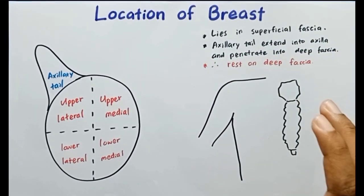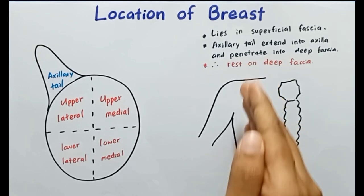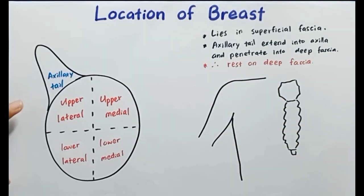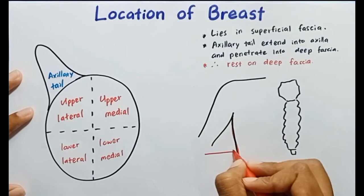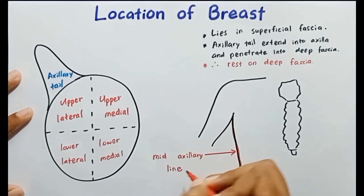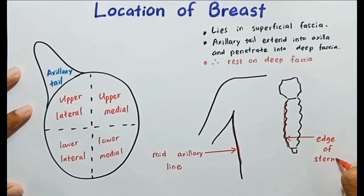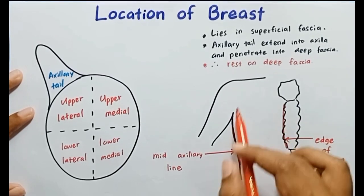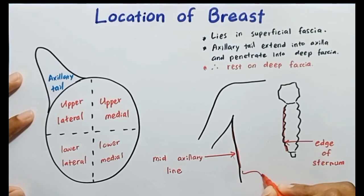The breast is located vertically between the second to sixth rib and horizontally between the edge of the sternum and mid-axillary line. So here you can see the mid-axillary line and this is the edge of the sternum. So the breast lies between these two edges. This is the horizontal location.